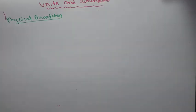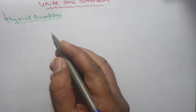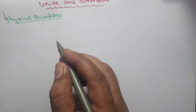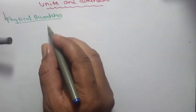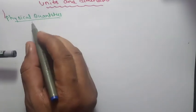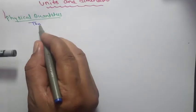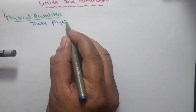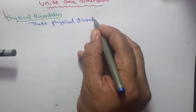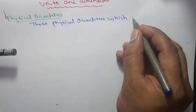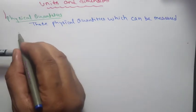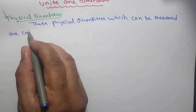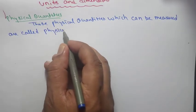What are physical quantities? Physical quantities are those which can be measured. For example, if I ask you how much friendship your friend has — can you measure it? No. So friendship is not a physical quantity. Those which can be measured are called physical quantities.